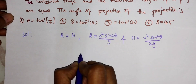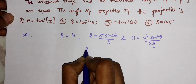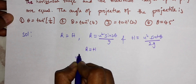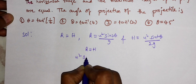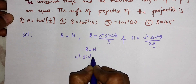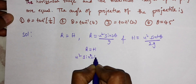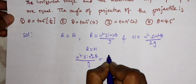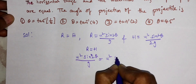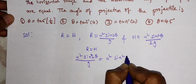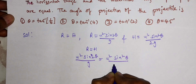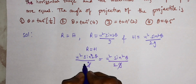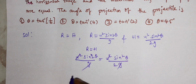From the data they have given, R is equal to H. So we will equate the two equations: u squared sin 2 theta by g is equal to u squared sin squared theta by 2g. Here, g and u squared will get cancelled on both sides.